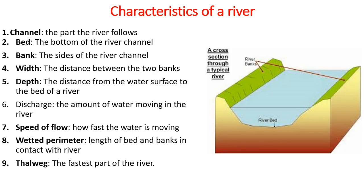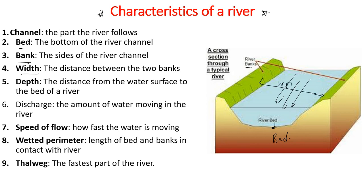Now let's look at the characteristics of a river. The channel is the part through which the river flows. The bed is the bottom of the river channel. The banks are the two sides of the river. Width is the distance between the two banks. Depth is the distance from the water surface to the bed. Discharge is the amount of water moving in the river.